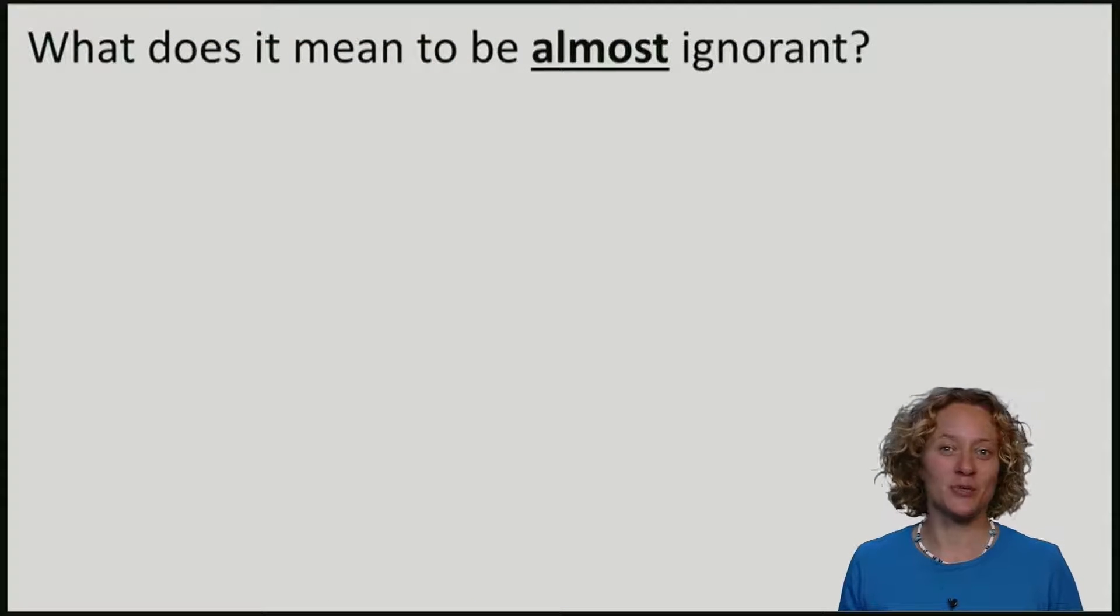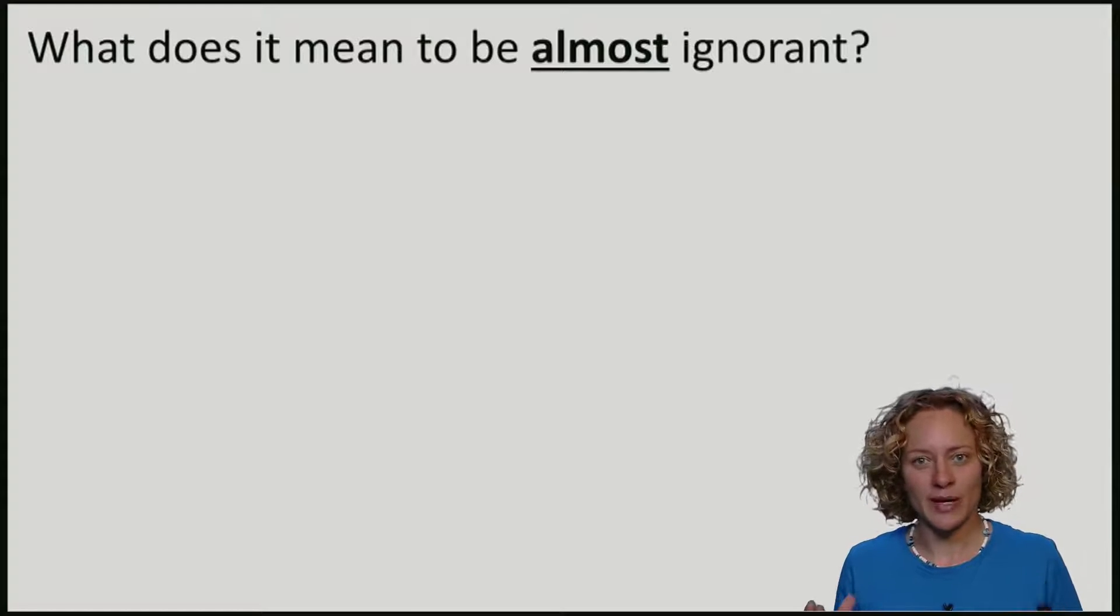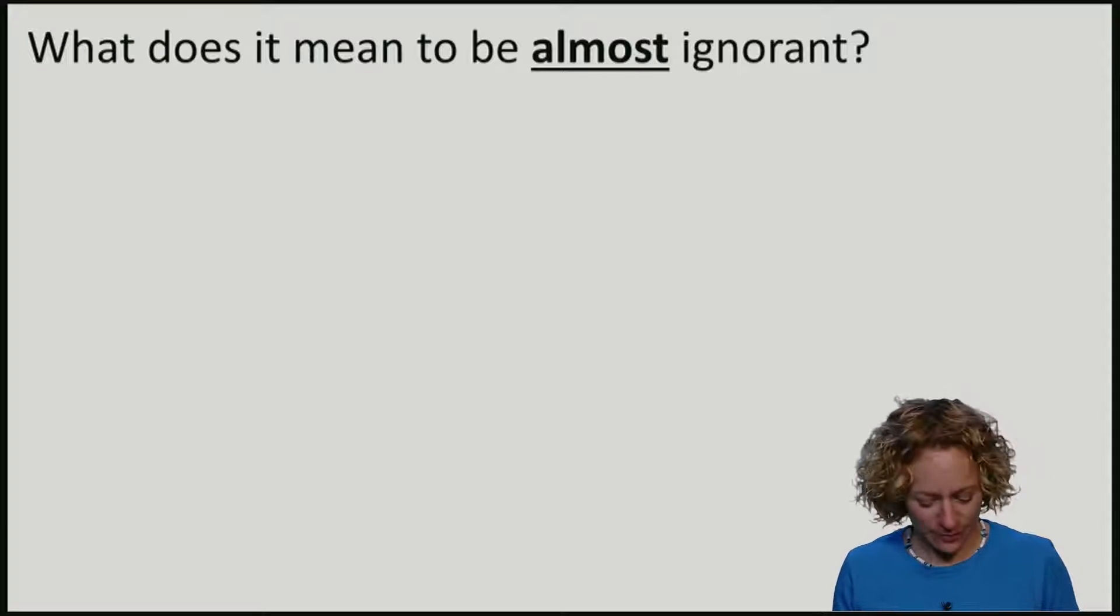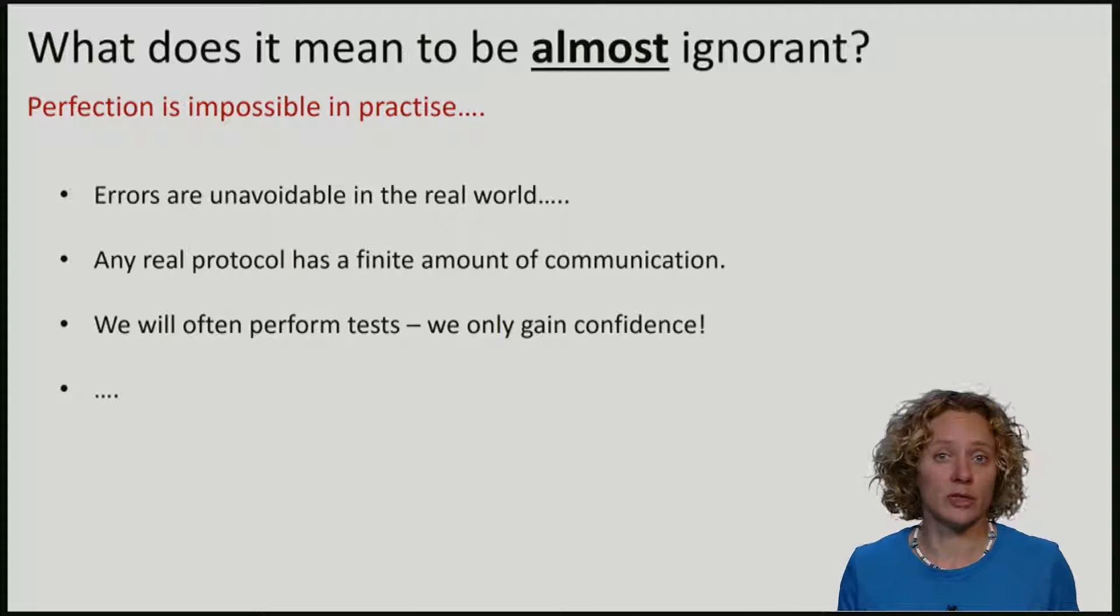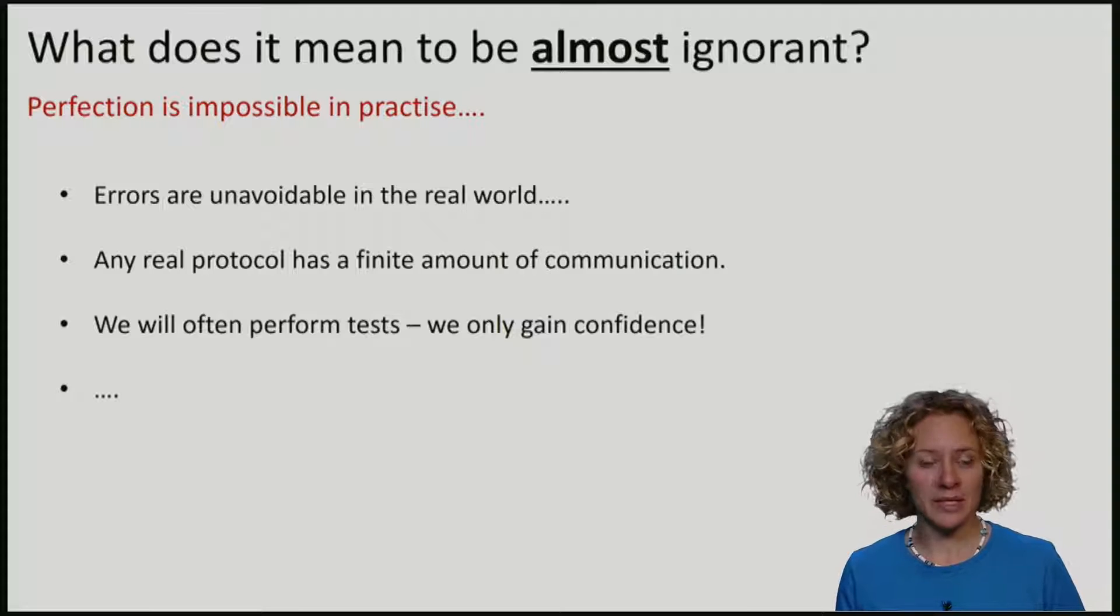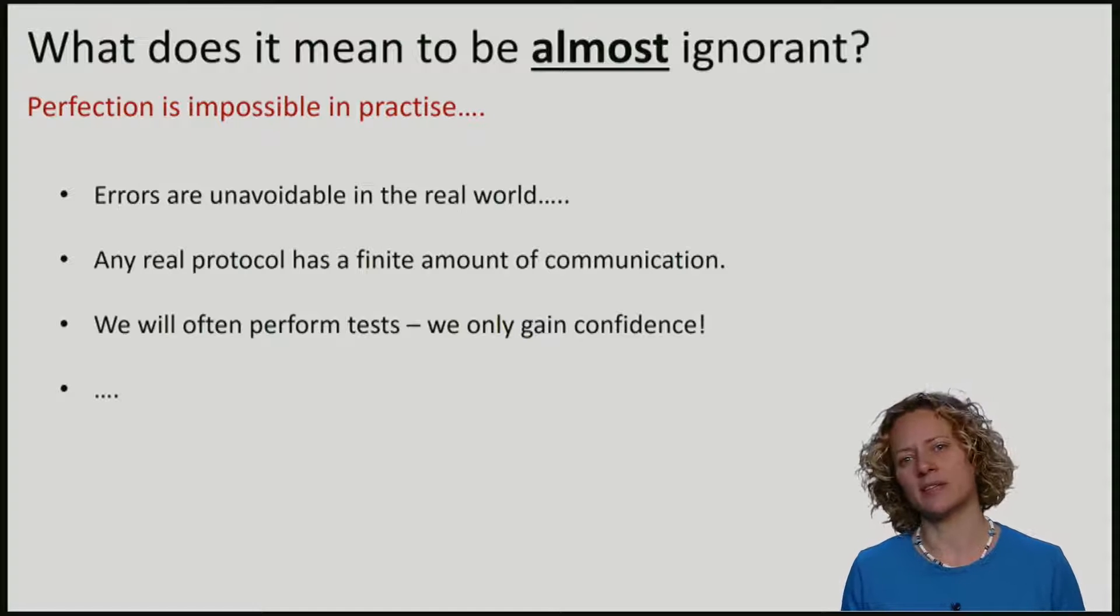We've just seen what it means to be ignorant, but to do practical cryptography we have to consider what it means to be almost ignorant. Perfection is essentially impossible to attain in practice. Errors are unavoidable in the real world, meaning that we will never end up exactly with the state that we wanted.